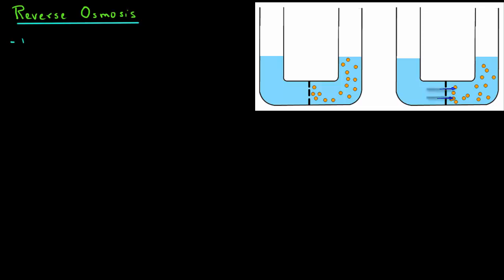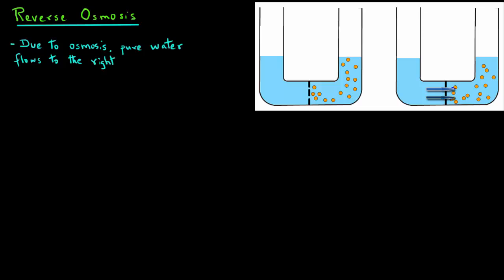So, due to osmosis, pure water flows to the right-hand column, and the height of the column will increase. Of course, sugar molecules cannot pass through the semi-permeable membrane.